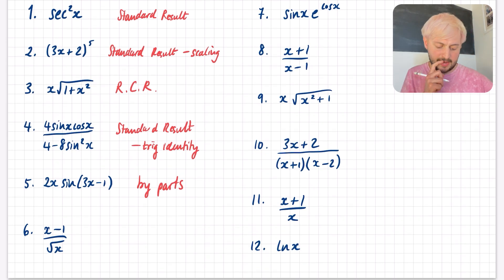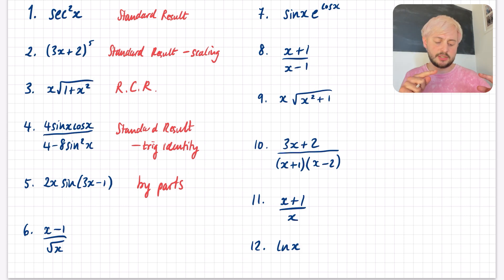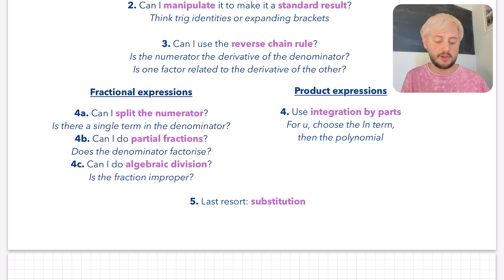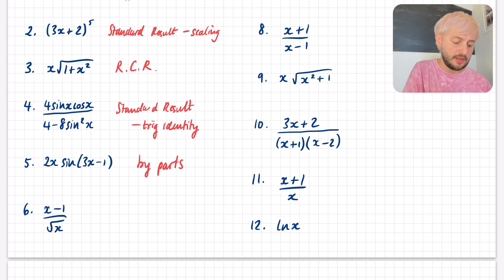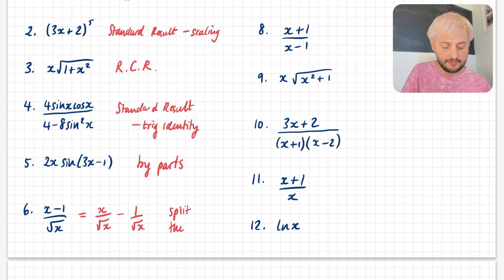Looking at question 6, I don't think this is a reverse chain rule because the numerator doesn't appear related to the derivative of the denominator. So I move into the fractional expressions section. Because there's a single term in the denominator, I can just split the numerator. When I say split the numerator, I mean split it so that you're doing x over √x minus 1 over √x. This is definitely a split-the-numerator technique.